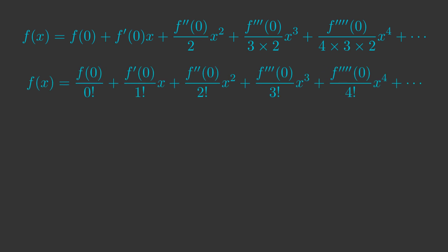For consistency we have divided the term in x by 1 factorial, which is 1, and the constant term is divided by 0 factorial, which is also 1. There is a link below that explains why 0 factorial is 1.